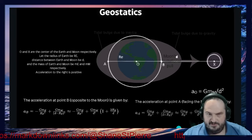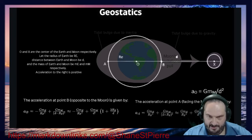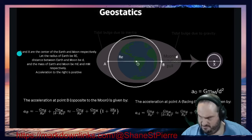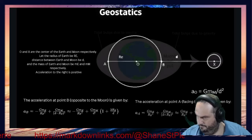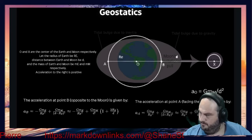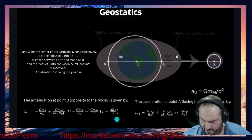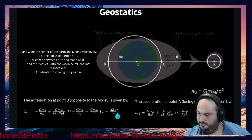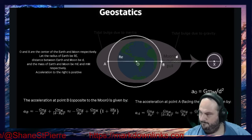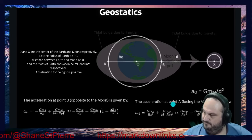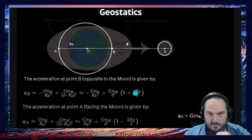We start the calculations. The acceleration at point B, opposite the Moon, is given by: a(B) = G·M_e / r_e² + G·M_m / (d - r_e)², which breaks down to G·M_e / r_e² plus G·M_m / d² times (1 + 2·r_e/d). Over on the other side, the acceleration at point A facing the Moon is given by a similar calculation on the near side.